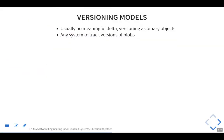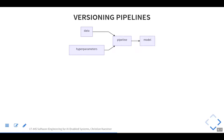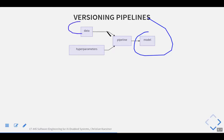Pretty much any system that can store binary data works — files with a naming convention, Git, some database. Then there's versioning pipelines — we can store the actual model and version the data, but what about the connection between the two? How did we create the model from the data, and what hyperparameters did we pick? For the pipeline, you just use Git or similar traditional version control. Hyperparameters are probably in your code anyway, or you need to version that separately as well.